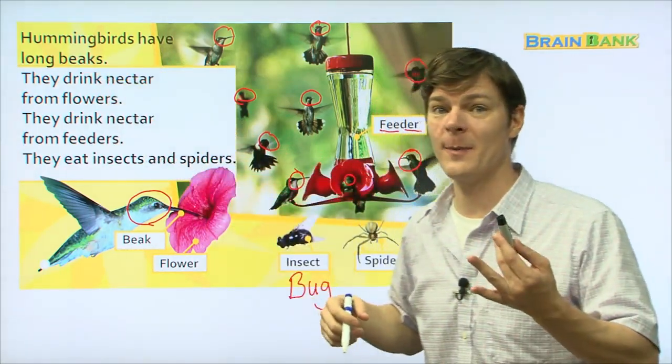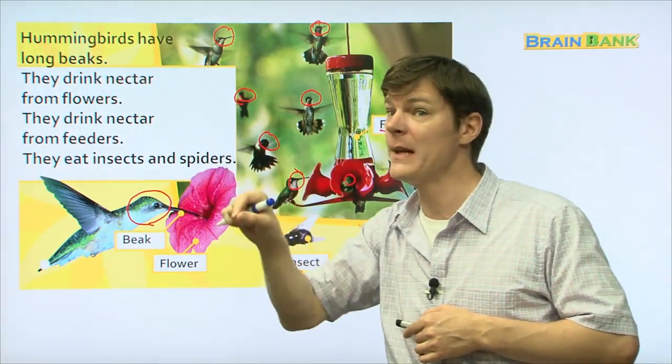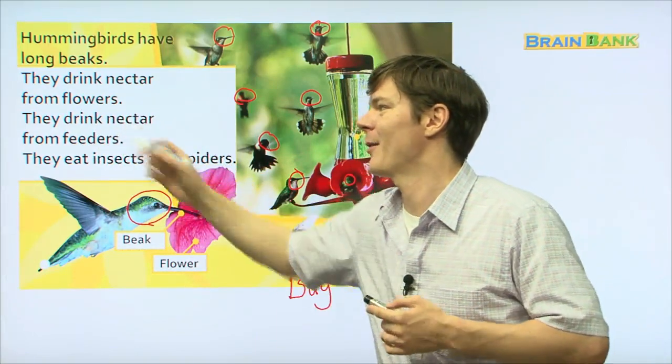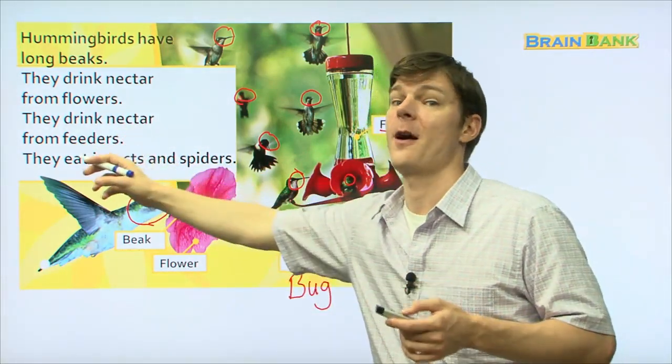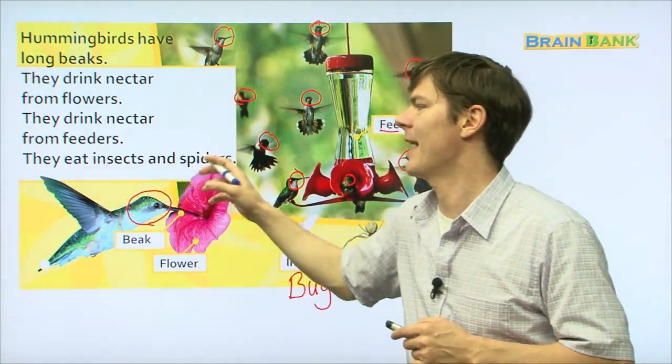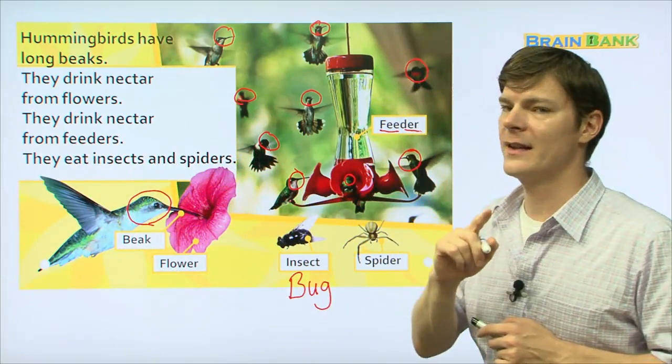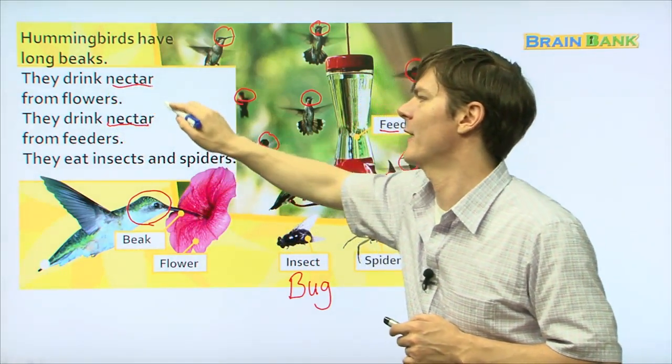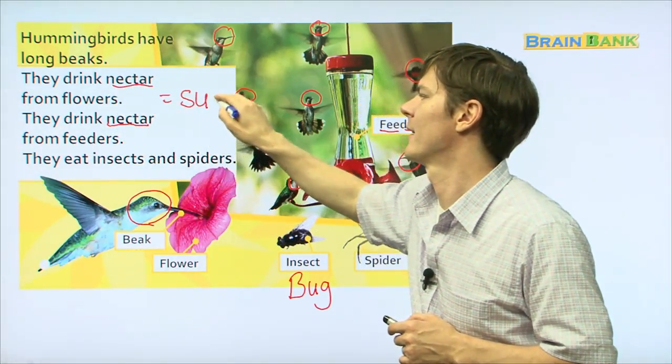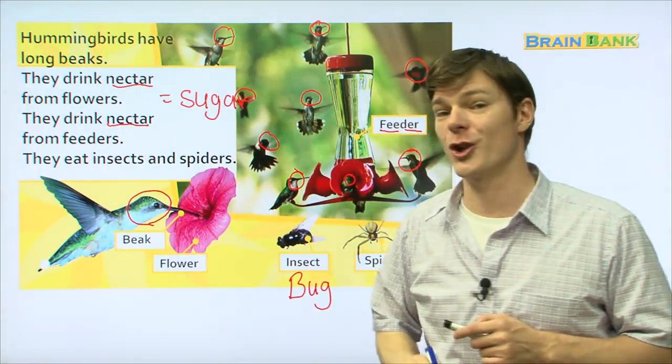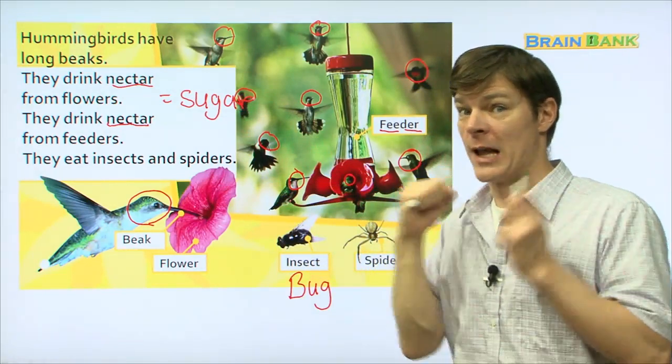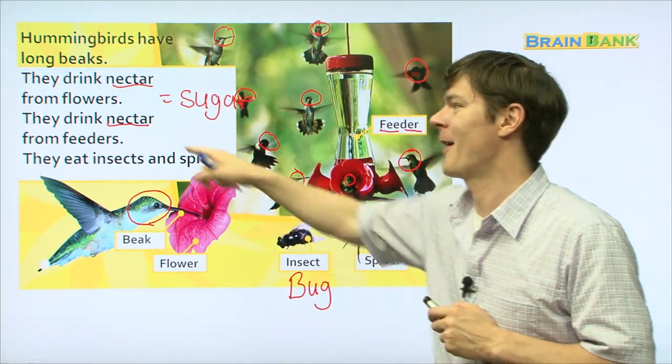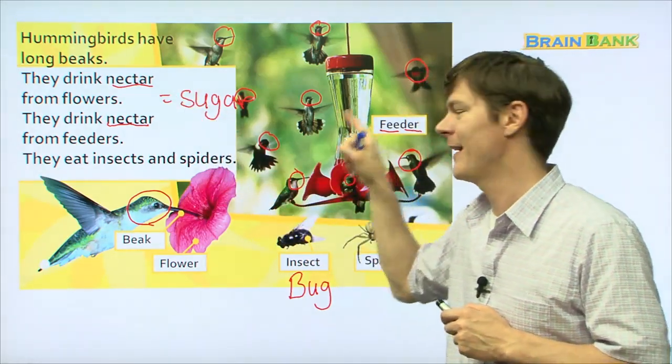Hummingbirds have long beaks. Read with me. Hummingbirds have long beaks. They drink nectar from flowers. They drink nectar from feeders. They eat insects and spiders. So last thing before we go on to the next page, I want to make sure you understand this word nectar. Nectar is kind of like sugar. And what happens when you eat sugar? You get a lot of energy, right? So hummingbirds need that energy and they get it from nectar in the feeder and in the flower.